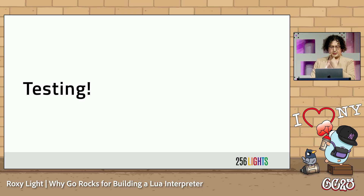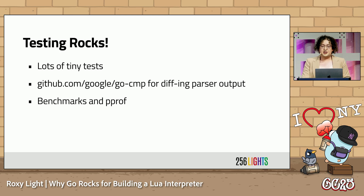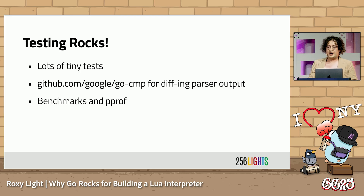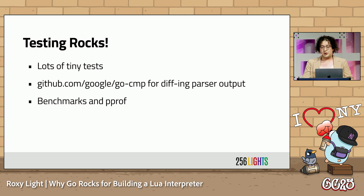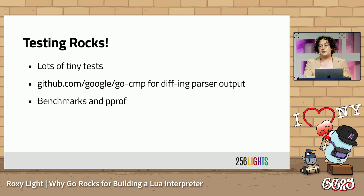I feel like I'm missing something. Oh, right — testing. For such a complicated project, it was critical to be testing frequently, and Go's testing package helped me spot check all sorts of things along the way. For example, I used the Go cmp package to quickly spot bugs in my parser by comparing my parser's output with the output from the PUC-Rio Lua parser.